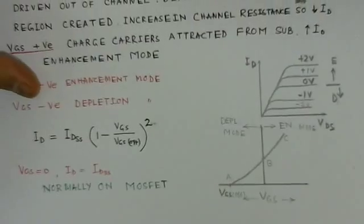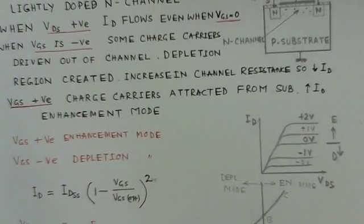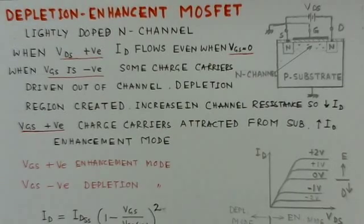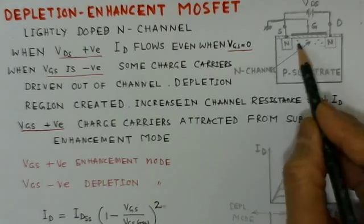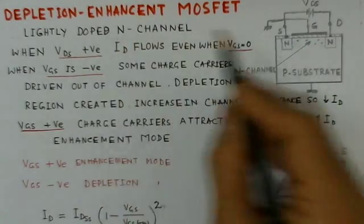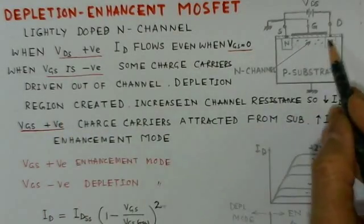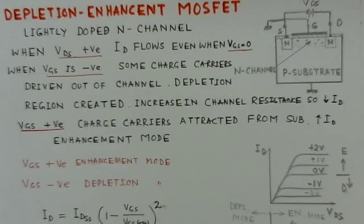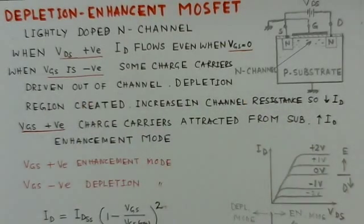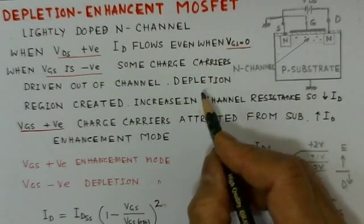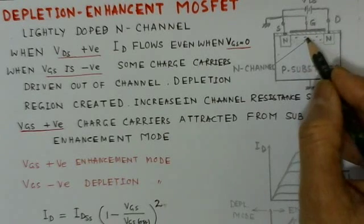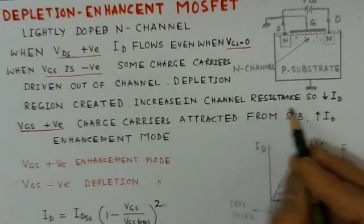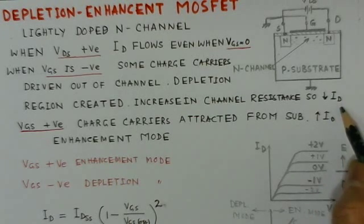Now we will see the depletion MOSFETs. A depletion-enhancement type MOSFET also exists. The only difference in construction is that an additional channel is fabricated — a lightly doped channel is already present. When the drain-to-source voltage is positive, Id flows. Even when Vgs is zero, there is a drain current Id flowing. When Vgs is negative, some charge carriers are driven out, a depletion region is created, and the channel resistance increases, so the drain current decreases for negative Vgs values.